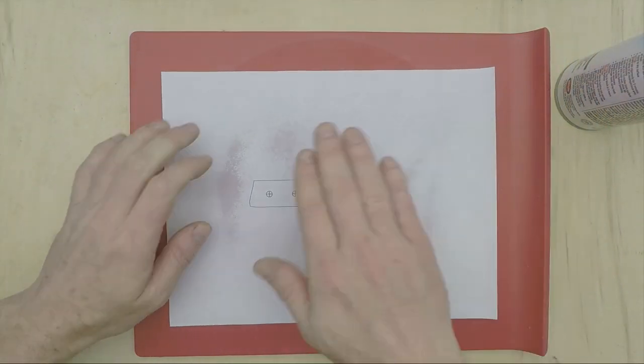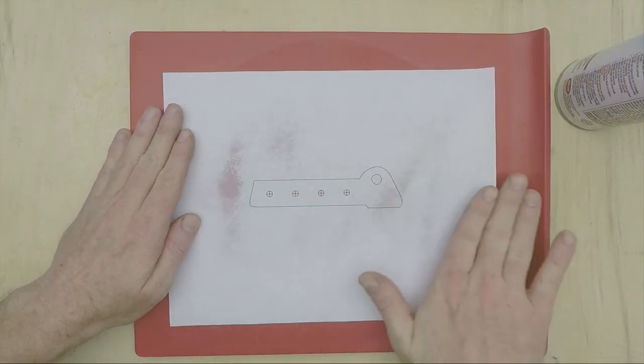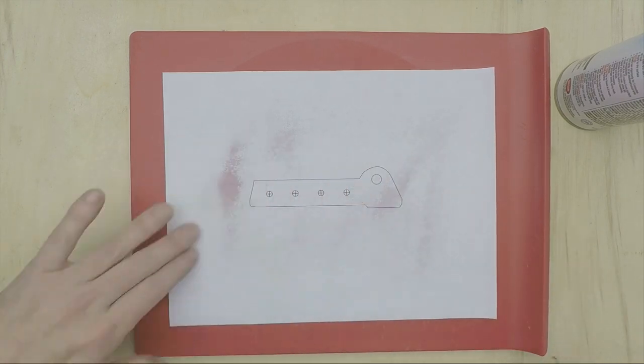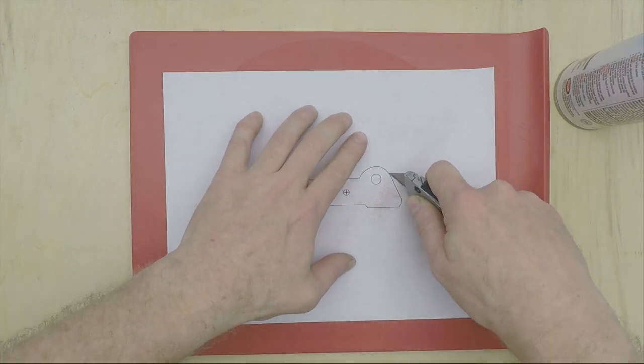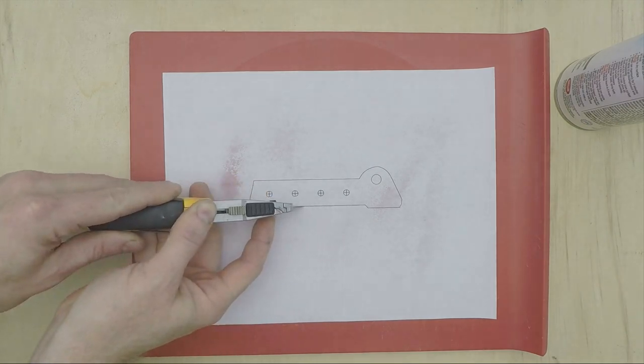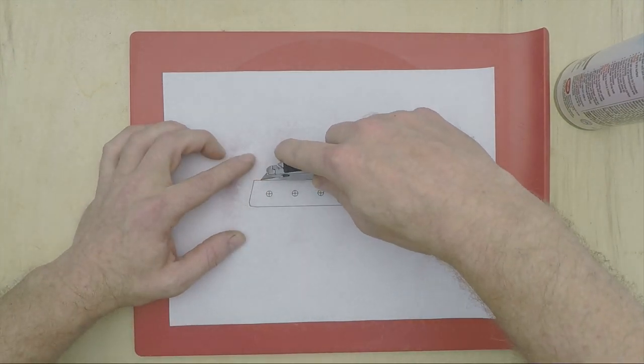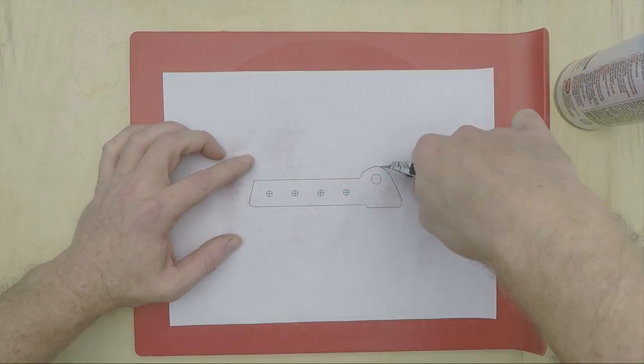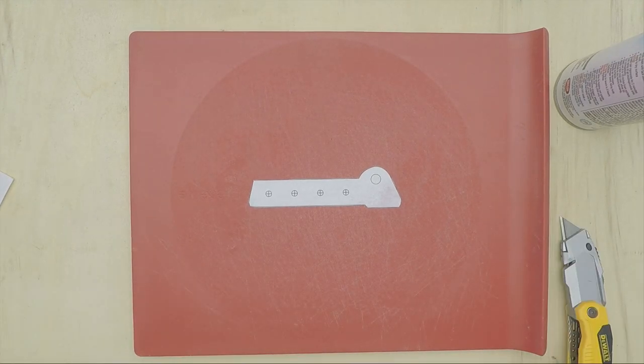Instead of having to cut intricate profiles with scissors, I can just spray adhesive onto the back of the template page exactly like it is when it comes off the printer, stick it down on my cutting board, cut it out with a razor or a hobby knife, then lift it off and transfer it to my work.